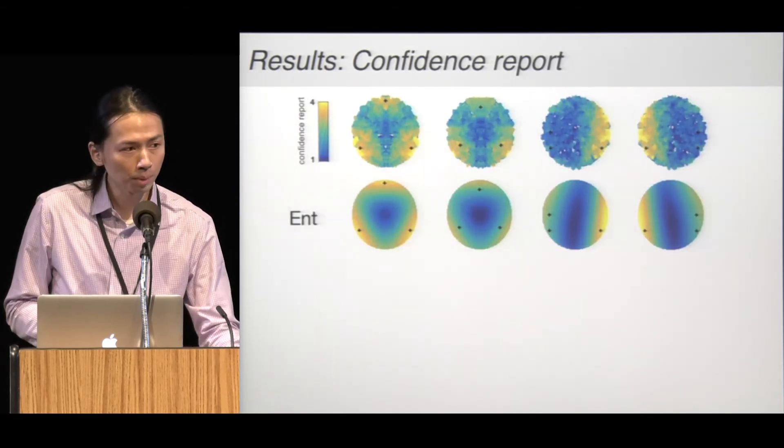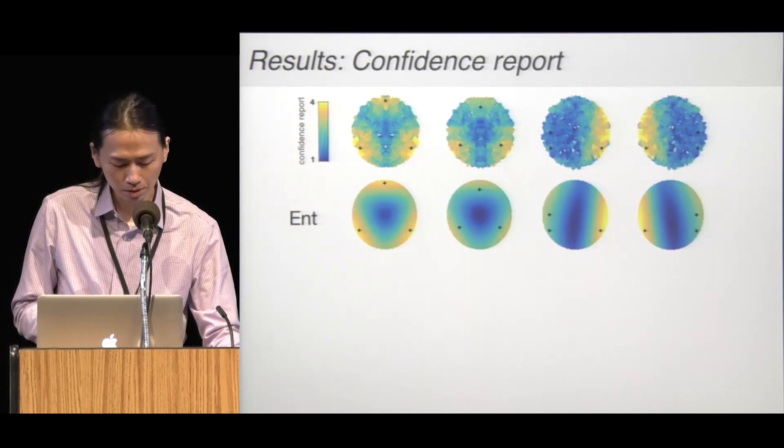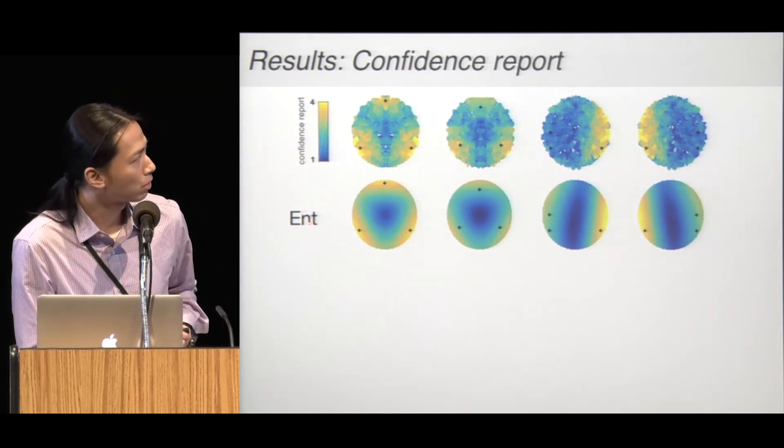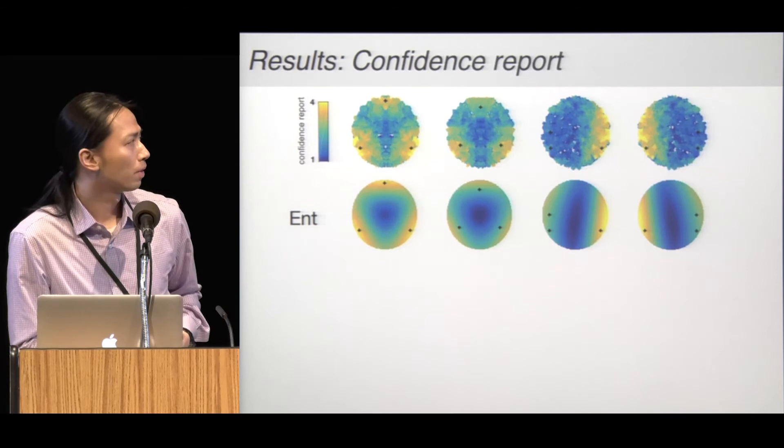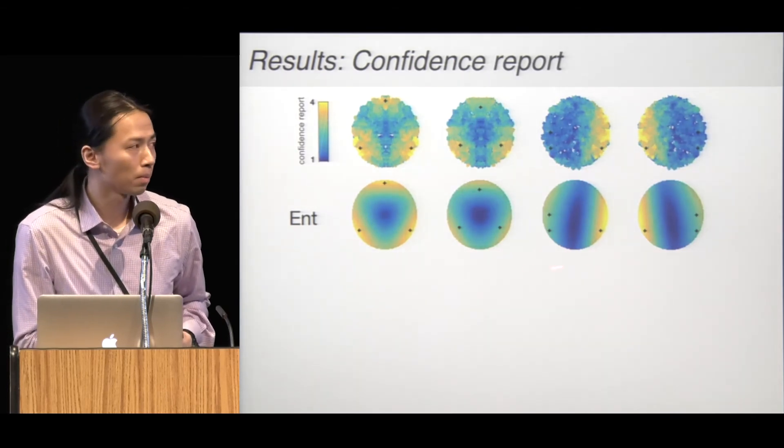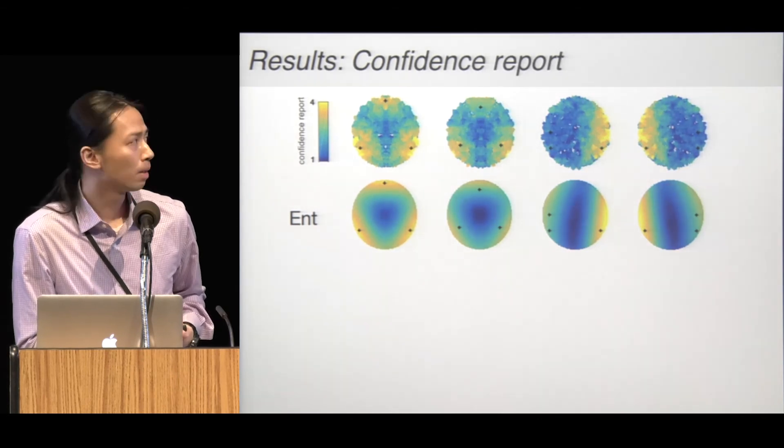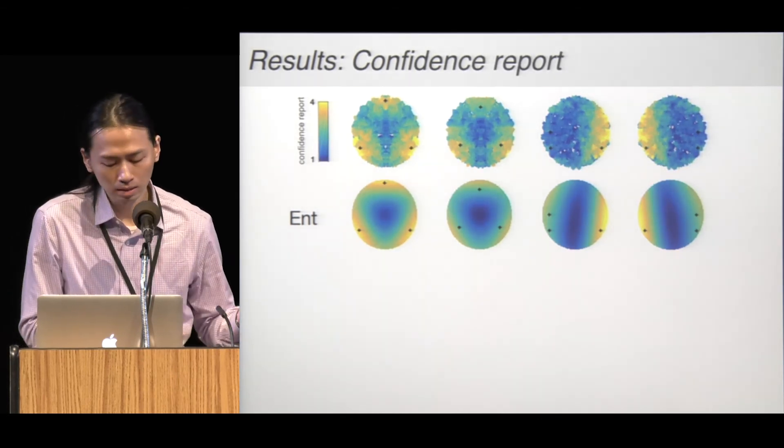Here, we use the best fit parameters to recover the model predictions. We can see there is some difference between the entropy model and the data. For example, in the first two conditions, the model predicts there are some convex contours on the heatmap, but we did not see that in the data.